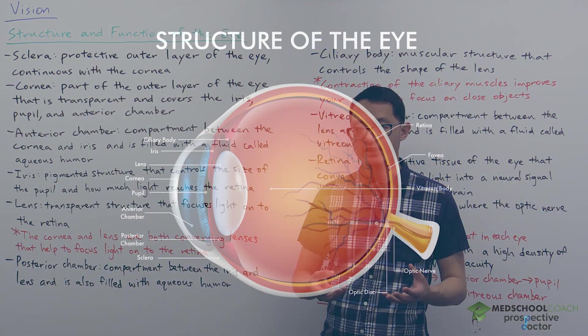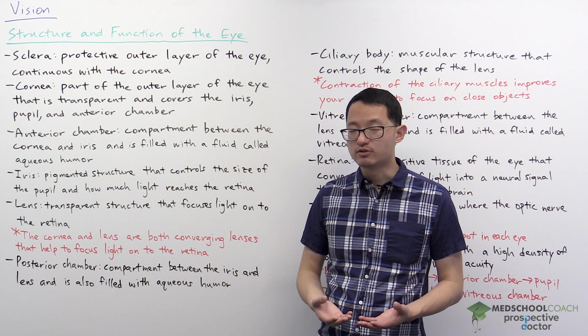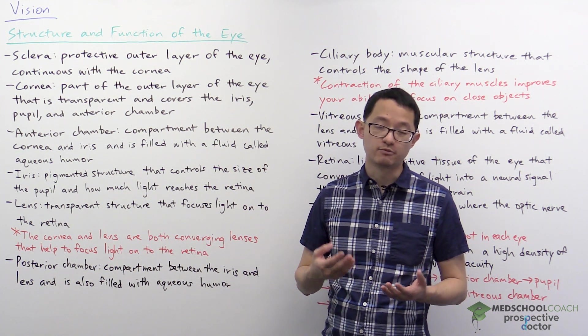The pupil, as you can see in the diagram, is a hole. And the size of this hole, the pupil, is controlled by the iris. The iris is a pigmented structure and its ability to control the pupil size is actually really important.